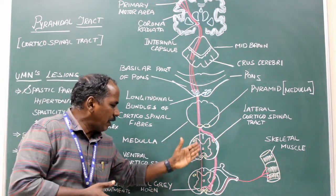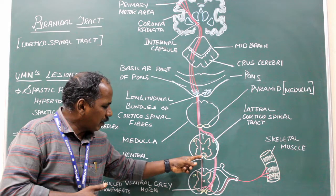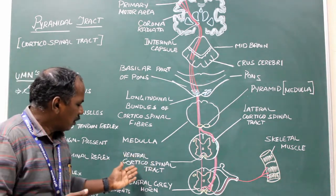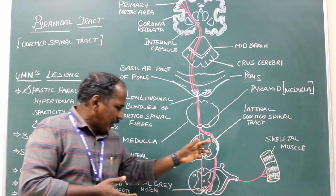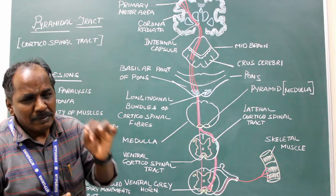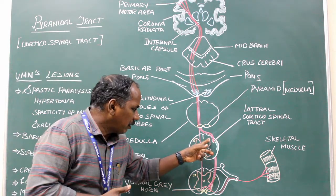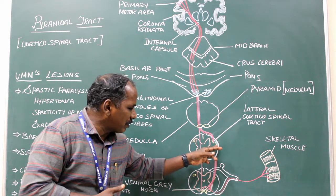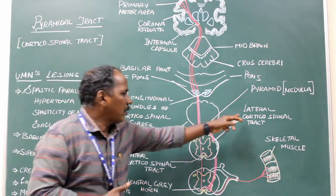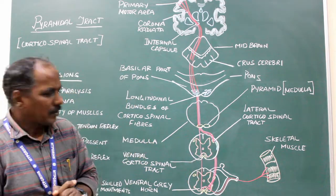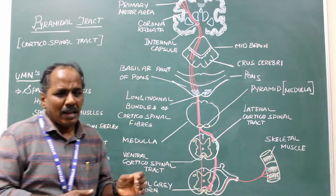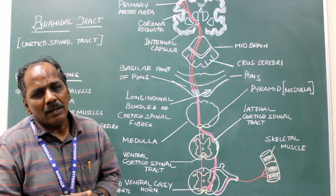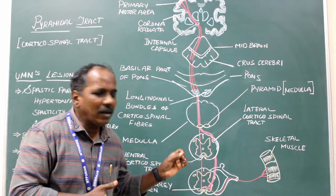The uncrossed fibers descend on the same side, entering the anterior white column and continuing as the ventral corticospinal tract. The lateral corticospinal tract lies in front of the posterior grey horn and medial to the posterior spinocerebellar tract. The ventral corticospinal tract lies in the ventral white column near the anterior median fissure.